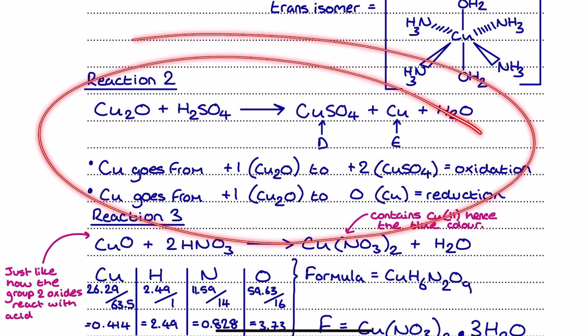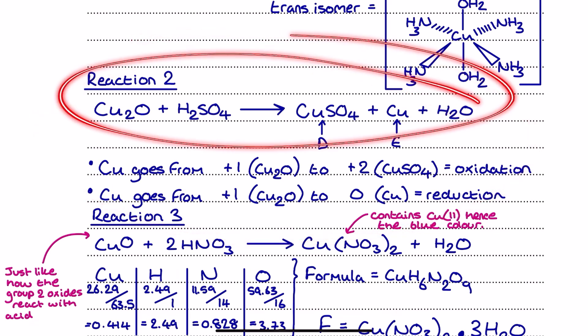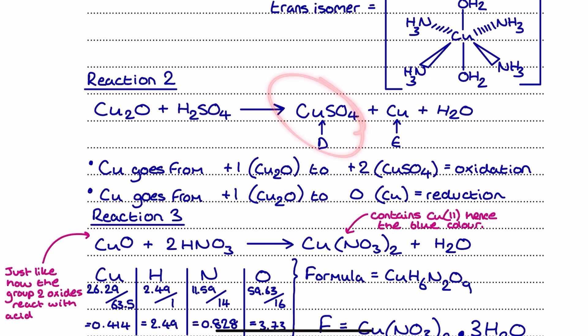This disproportionation process is something you are meant to be aware of. And you can see I've got my full reaction equation here with D, the blue solution, and E, the brown solid, being clearly identified. You are not allowed to refer to the copper as a copper-colored solid. You must say it's a brown solid.